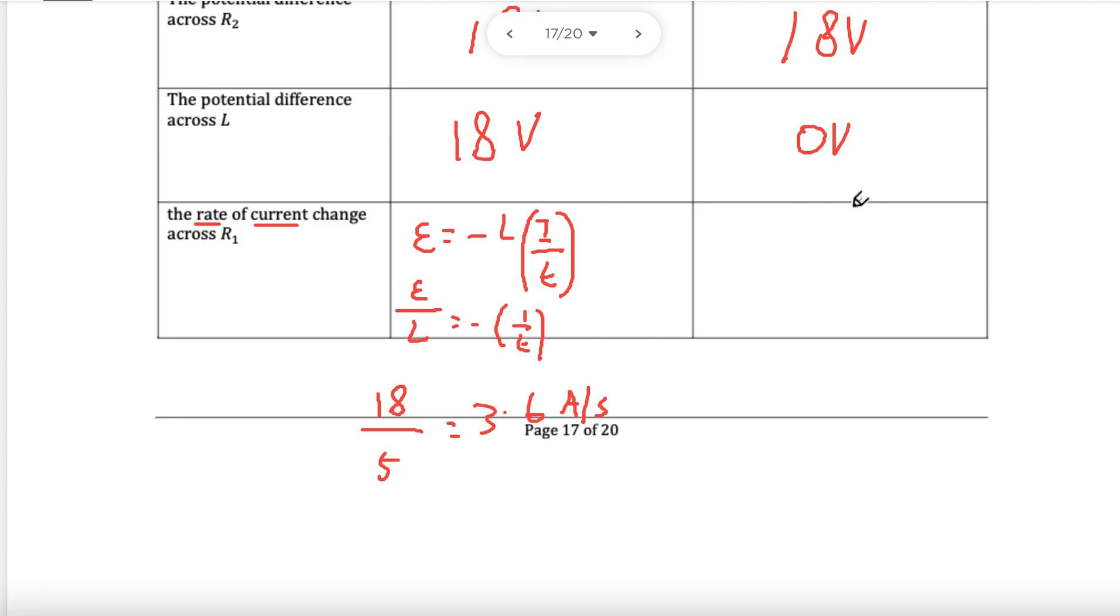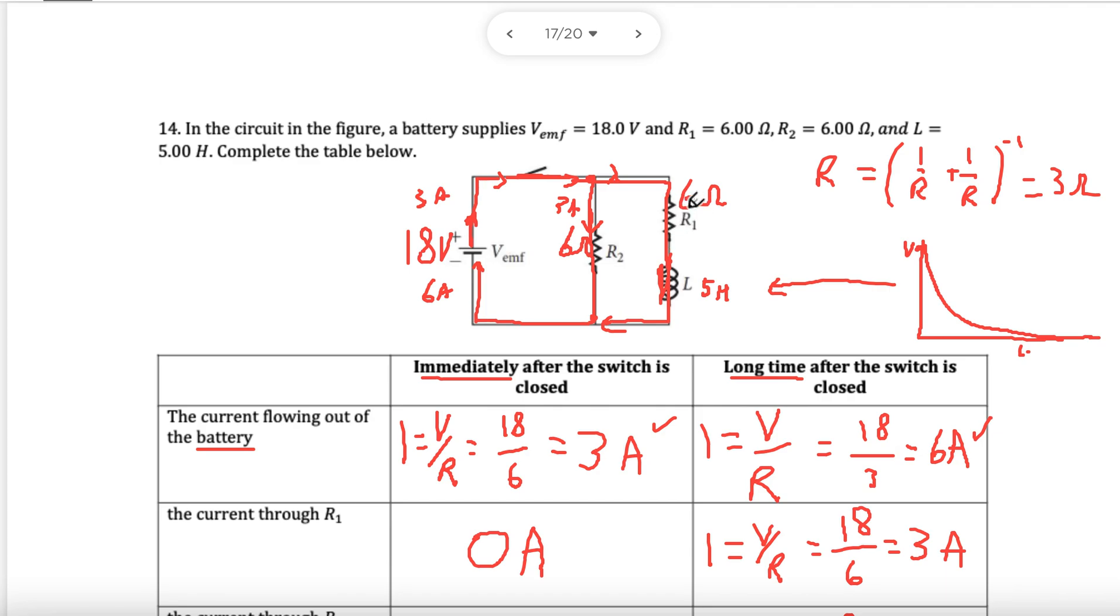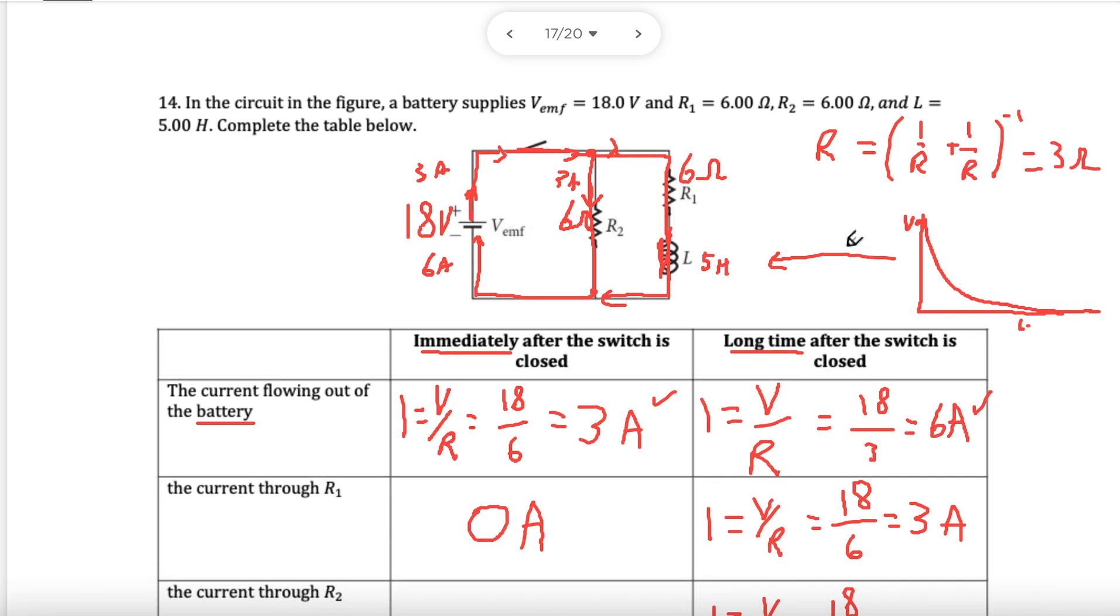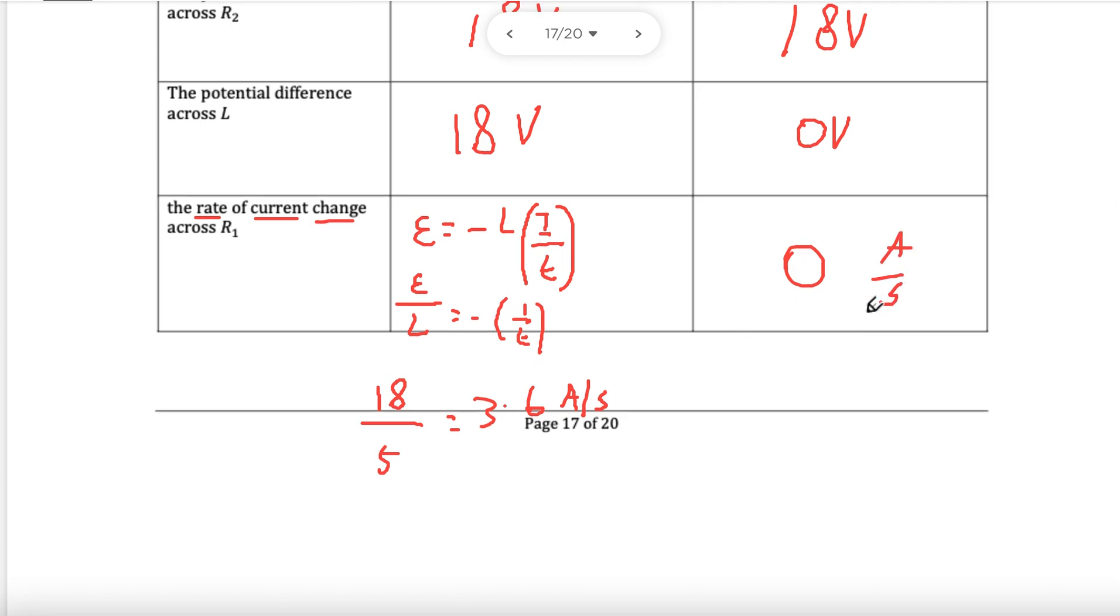Now, the rate of change of current after a long time. Well, what happens after a long time? The current becomes steady. The current is no longer changing. There is no rate of current change. The current isn't changing. It is zero. No change. Don't need to write anything. Just zero. You can write amps per second if you like. No change. Steady current.